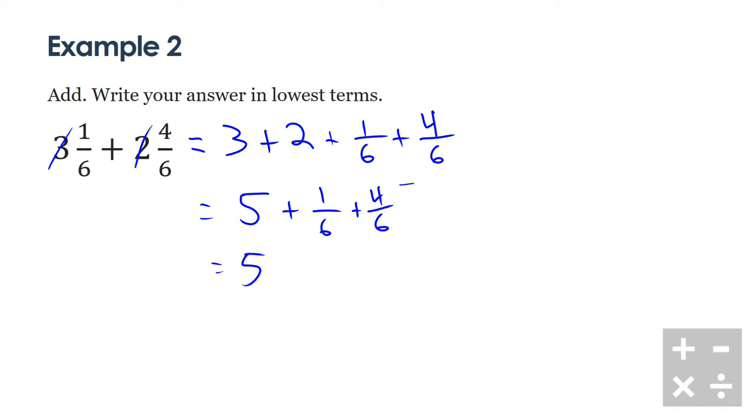I can also line up my 1 over 6 plus 4 over 6. I know on my next line my 5 is going to come along with us, and my 1 plus 4 goes on top of the denominator 6. I know that 5 comes along again and 1 plus 4 also gives me a 5, so I have 5 over 6.